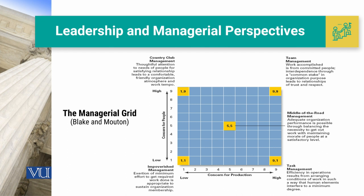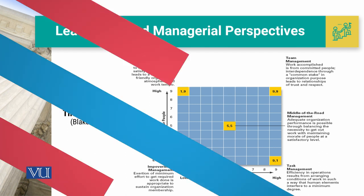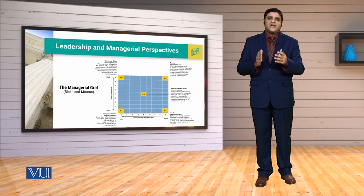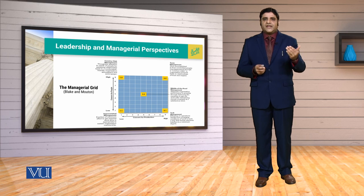Nine-one means concern for production is maximum and concern for people is minimum, and that area is known as task management — the leadership style required here is task-oriented. Against all four of these, we have the five-five situation which is called middle of the road management. In middle of the road management, we achieve satisfactory results with average concern for production and average concern for people. According to Blake and Newton's model, these leadership styles differentiate based on whether concern for production or concern for people is higher.